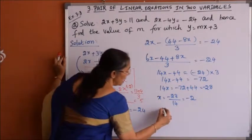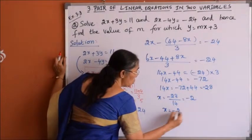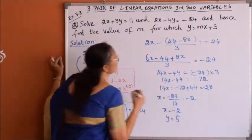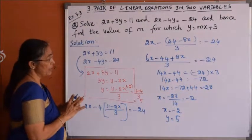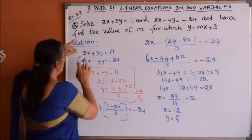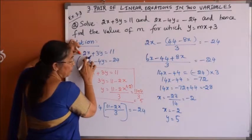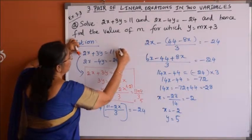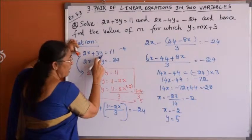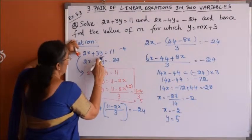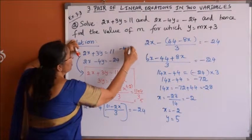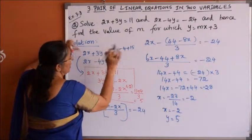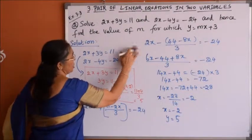So the solution is x equals minus 2 and y equals plus 5. Let us verify: substituting in the first equation, 2 times minus 2 plus 3 times 5 gives minus 4 plus 15, which equals 11. Our solution is correct and verified.